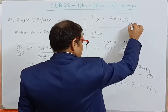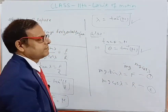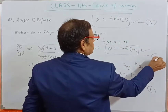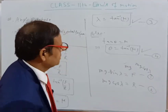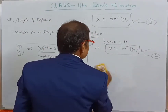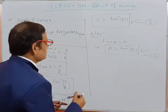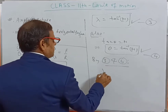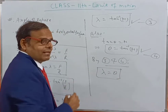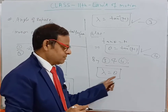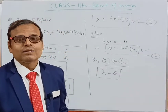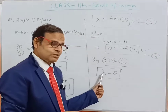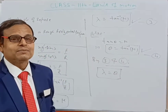Comparing Equation 3 and Equation 4, we find that lambda is equal to theta. Here, lambda is the Angle of Repose and theta is the Angle of Friction. That means the Angle of Friction is numerically equal to the Angle of Repose.